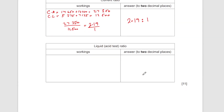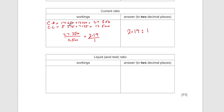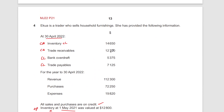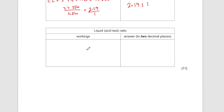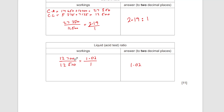For the liquid acid test ratio, you ignore the inventory. So we take only the receivables: 12,700 for liquid current assets. The current liabilities remain 12,500. So 12,700 over 12,500 gives 1.02, expressed as 1.02 to 1.